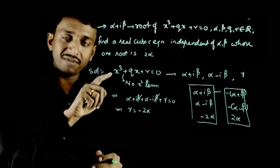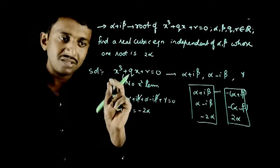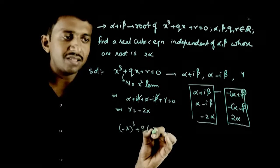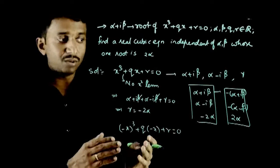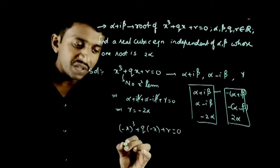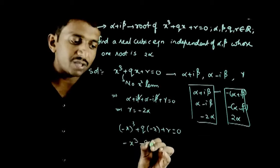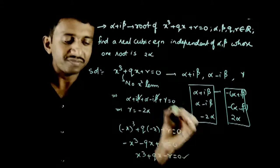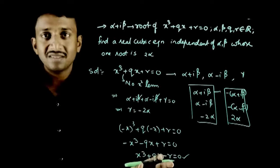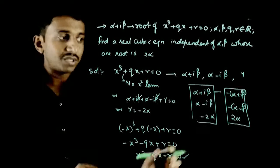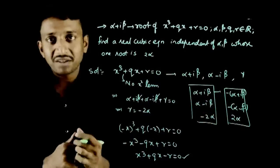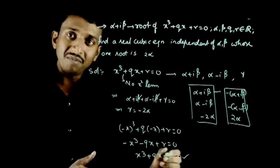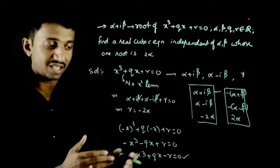Using the transformation x → -x: substitute minus x into the equation. Minus x cubed plus q times minus x plus r = 0, giving minus x³ minus qx + r = 0, or x³ + qx - r = 0. This equation has roots minus of alpha + i*beta, minus of alpha - i*beta, and plus 2*alpha.